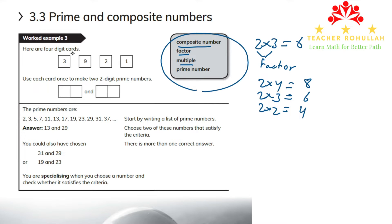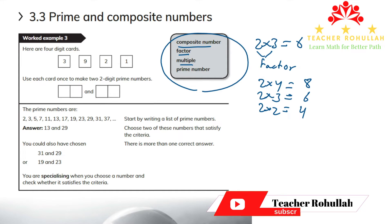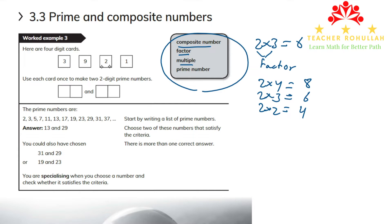We have a worked example: here are four digit cards — 3, 9, 2, and 1. We need to use each card once to make two two-digit prime numbers. Prime numbers have only two factors: 1 and the number itself. The prime numbers we can make are 31 and 29. Other options include 19 and 23, or 13 and 29.